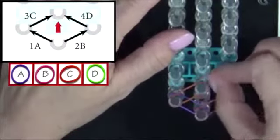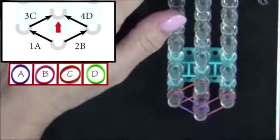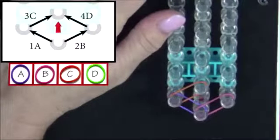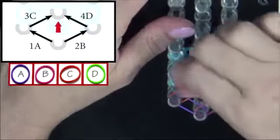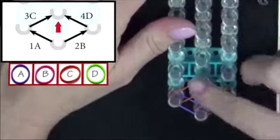3C will be placed from the left to the center. And 4D will be placed from the right to the center.